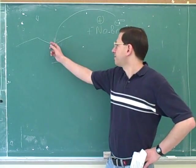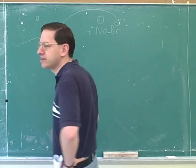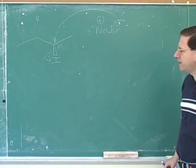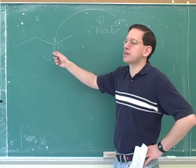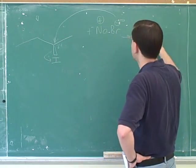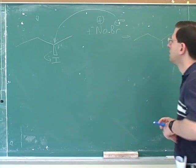However, this already has a full octet, so it can't gain electrons unless the iodine leaves at the same time. How many steps are there in an SN2 reaction? There's one. That's right. So we have to show these two things happening concertedly.